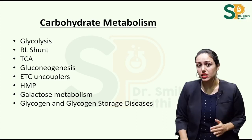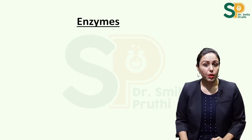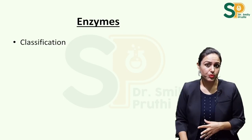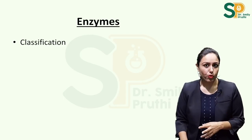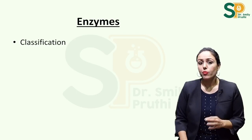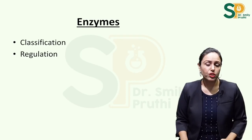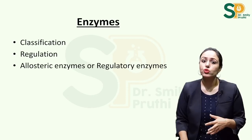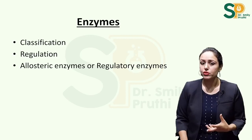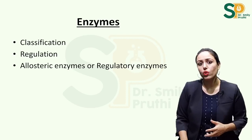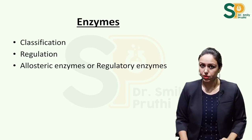Also do galactose metabolism, especially the enzyme defect in classical galactosemia, and study glycogen and glycogen storage diseases in detail — one question on glycogen is a must in your exam. In enzymes, the classification has six types known as EC numbers one to six. Do the subtypes of all enzyme categories and their examples, as they can ask the EC number of any enzyme — this is a frequently asked topic. Also study regulation of enzymatic activity, including covalent regulation (phosphorylation/dephosphorylation) and allosteric regulation.